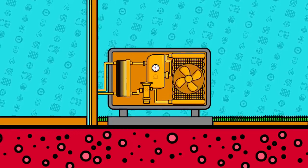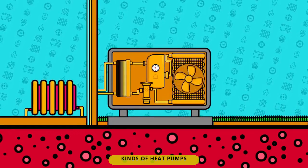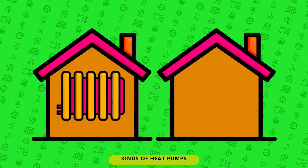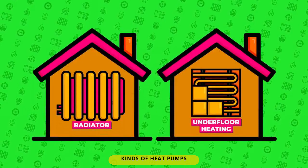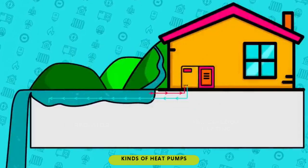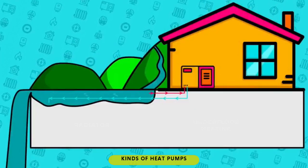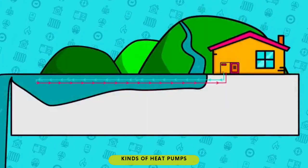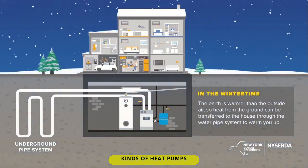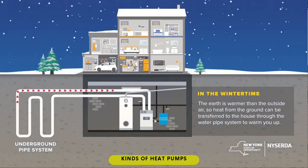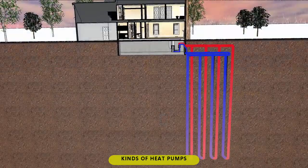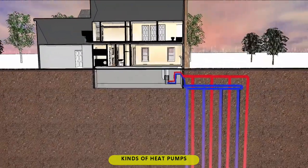Kinds of heat pumps. 1. Air source: transfers heat from the outside air to water, which heats your rooms via radiators or underfloor heating. 2. Water source: extracts and disperses heat by water — the most efficient type of heat pump. 3. Geothermal source: uses the constant underground temperatures of the shallow earth as thermal storage that enables efficient heating and cooling.